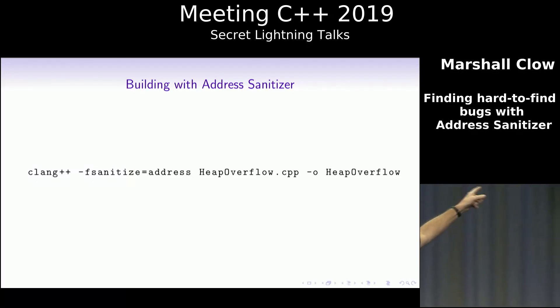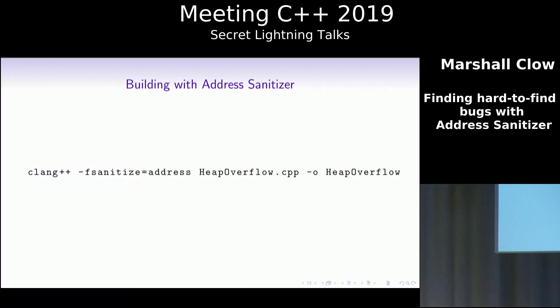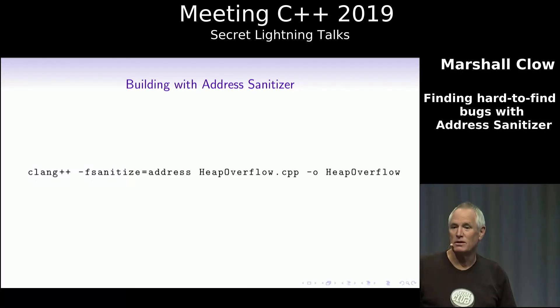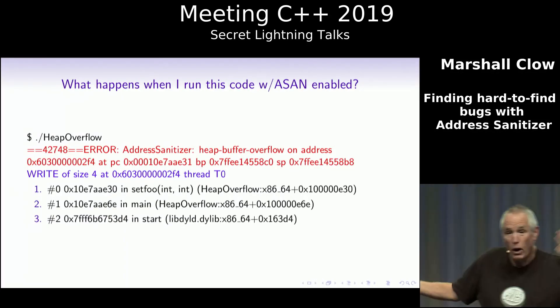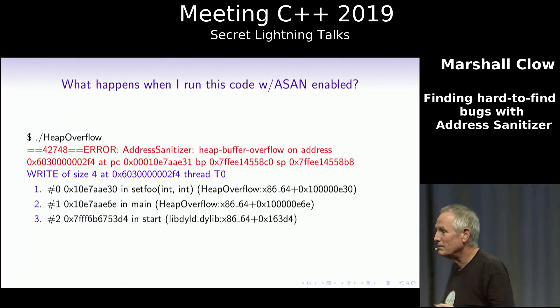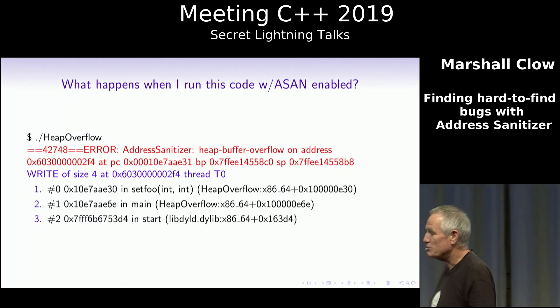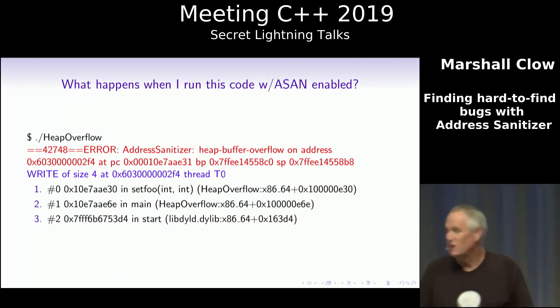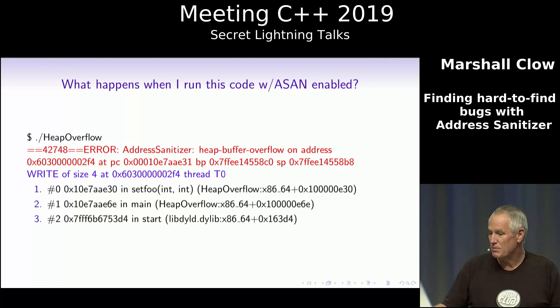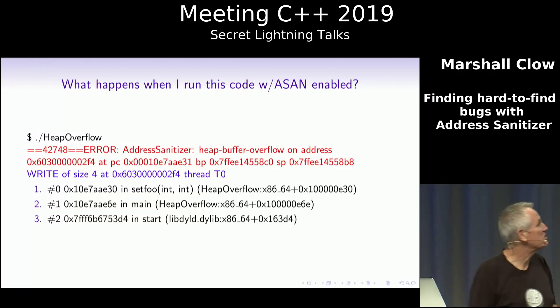How do you enable it? Add `clang++ -fsanitize=address` to your build script. That's it — one line, one option. And so what happens when you run this?